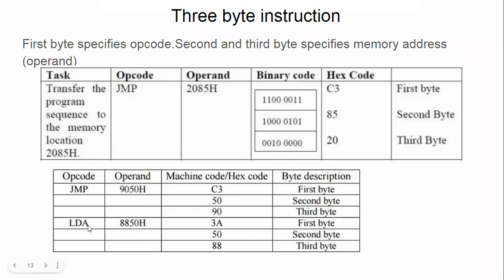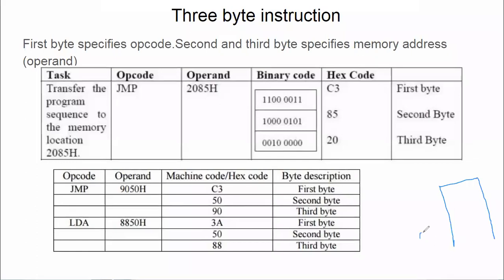Another three-byte instruction example: LDA — load the accumulator with the data present at a given memory location. Here you provide the memory location, say 8850. You know memory location is 16 bits — two bytes. After execution of the statement, the accumulator will be loaded with the value stored at memory location 8850.